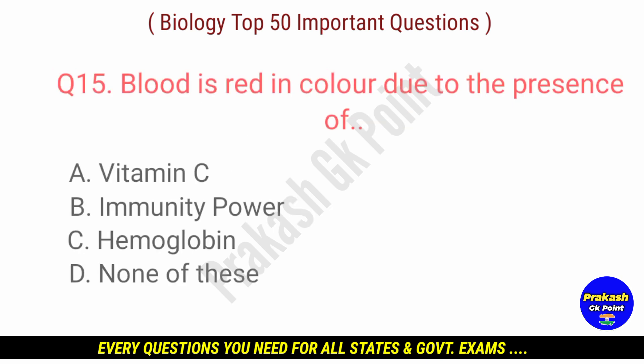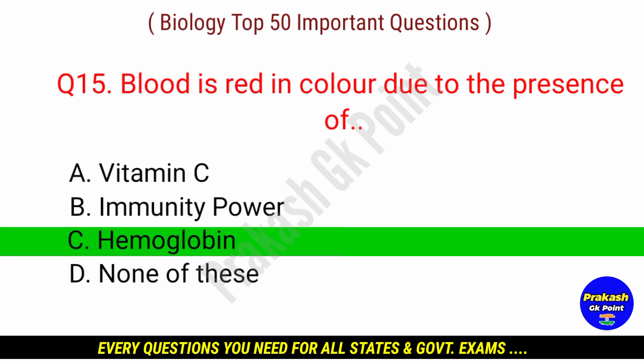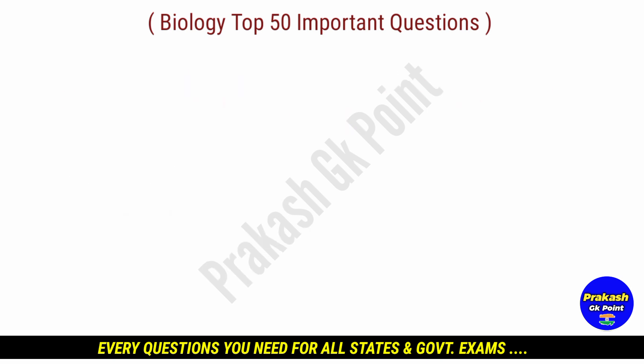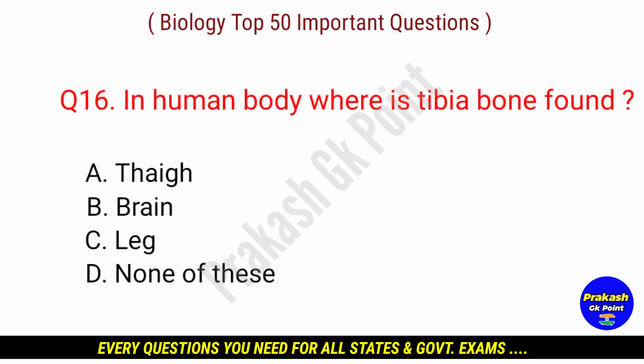Blood is red in color due to the presence of? Answer: option C — Hemoglobin. In the human body, where is the tibia bone found?